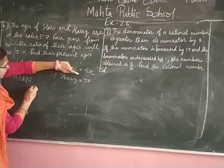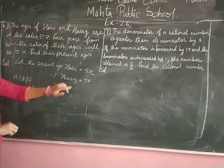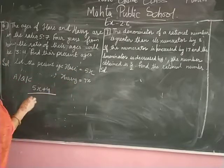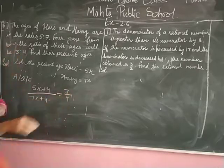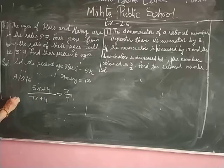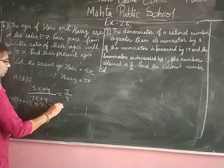The ratio is equal to 3 upon 4. So 4 years after, we write: 5x plus 4 ratio 7x plus 4 is equal to 3 upon 4. Now we can find the value of x: 4 into (5x plus 4) is equal to 3 into (7x plus 4).